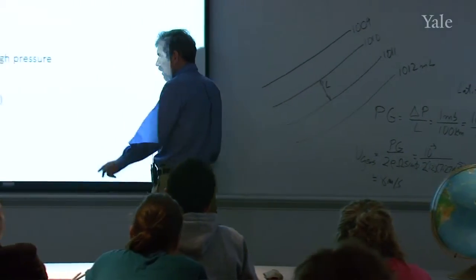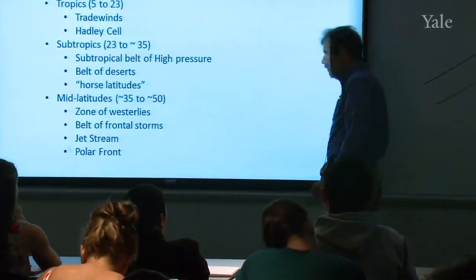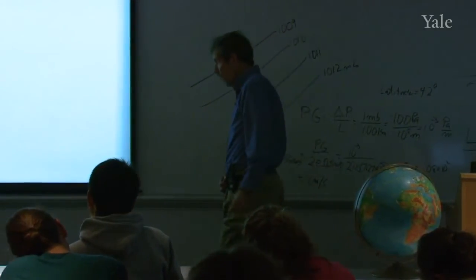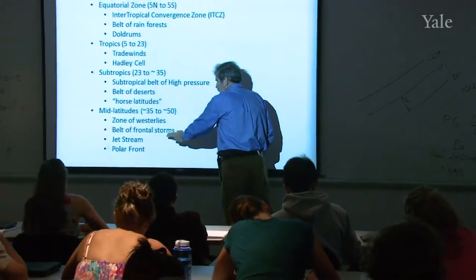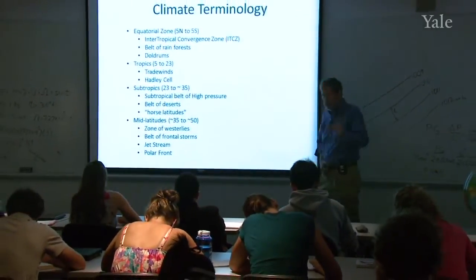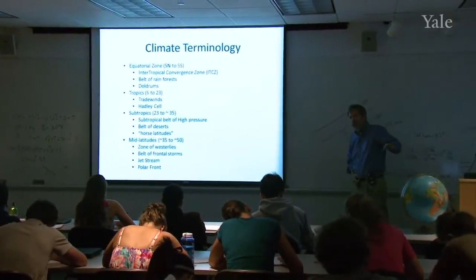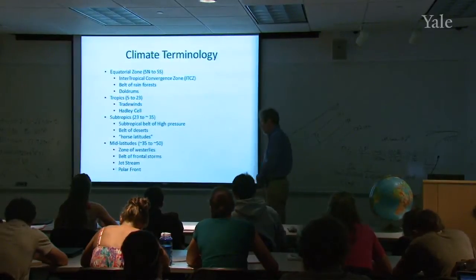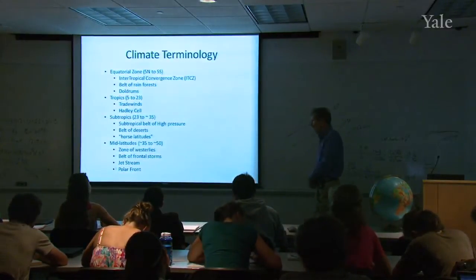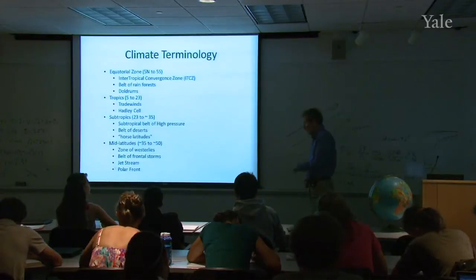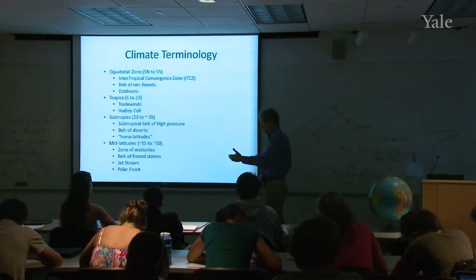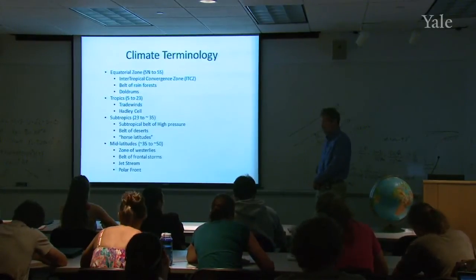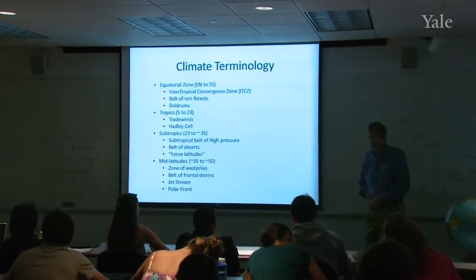Then we get into mid-latitudes — that's where we live. New Haven's latitude is about 41 degrees north, so we're clearly in that zone. Generally it's a zone of westerlies and the belt of frontal storms — remember all those little comma clouds zipping from west to east. The jet stream is here, and the so-called polar front, which is a boundary between colder air to the north and warmer air to the south in the northern hemisphere, is found in the mid-latitude zone.